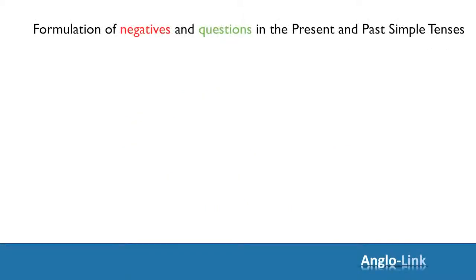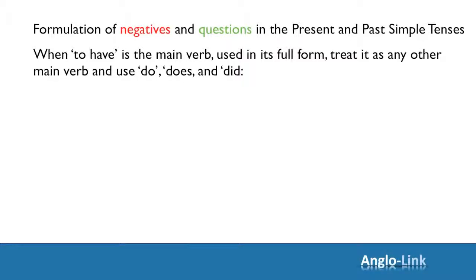One particular point you have to be careful of is how to make negatives and questions in the present and past simple tenses. When TO HAVE is the main verb used in its full form, treat it as any other main verb and use DO, DOES and DID to formulate a negative or a question. For example, I have a car. Negative: I don't have a car. Question: Do I have a car?